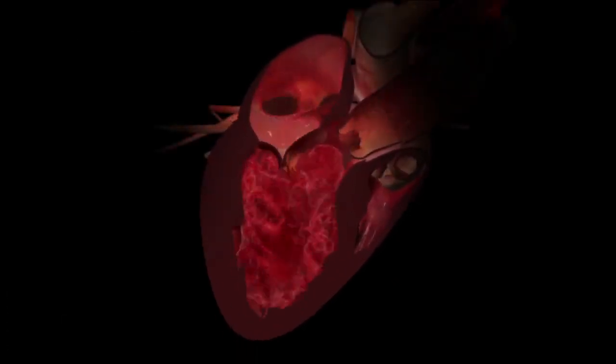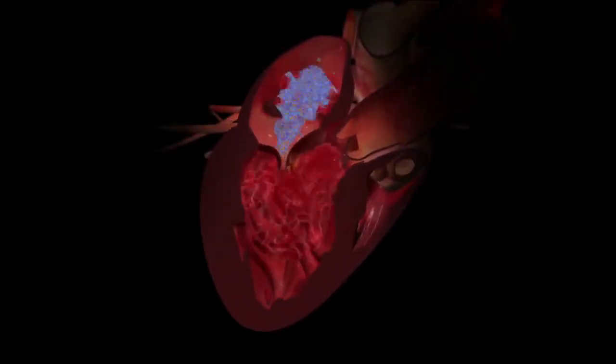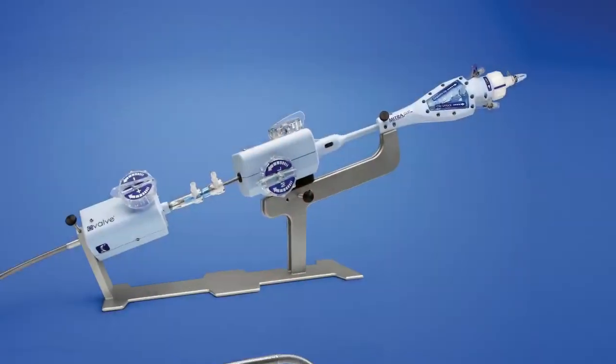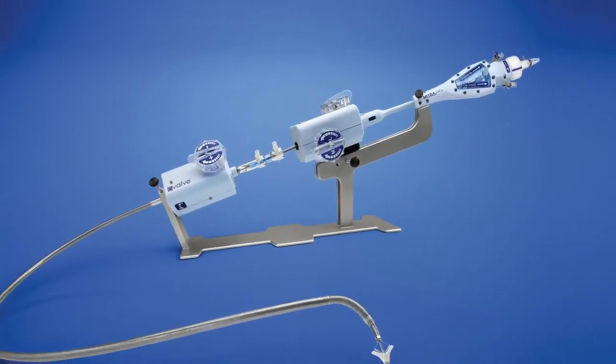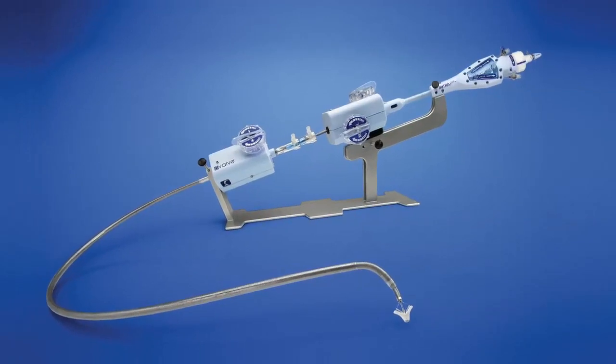The blue flow filling the left atrium illustrates severe mitral regurgitation or MR. The percutaneous mitral repair system consists of catheters and the MitraClip device.